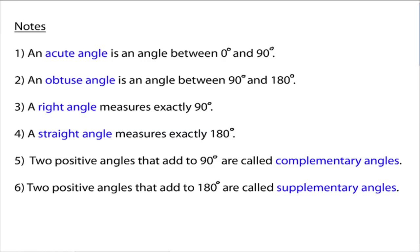Some more terminology. An acute angle is an angle that's between 0 degrees and 90 degrees. An obtuse angle is an angle that's between 90 degrees and 180 degrees. A right angle measures exactly 90 degrees. A straight angle measures exactly 180 degrees. Then if you take two positive angles and they add up to 90 degrees, they're called complementary angles. And if you take two positive angles that add up to 180 degrees, they are called supplementary angles.